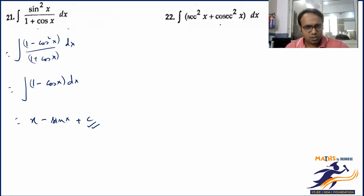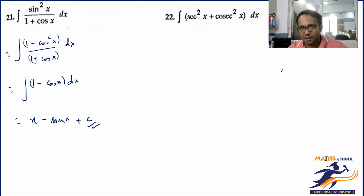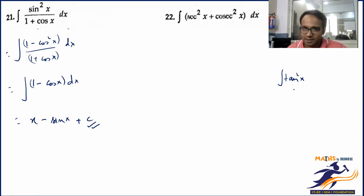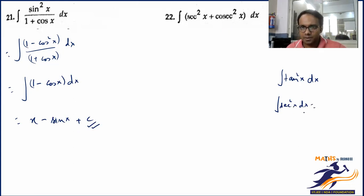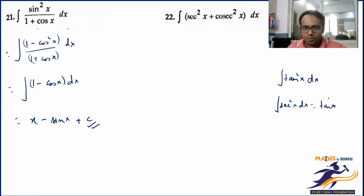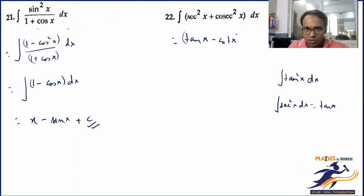Now think about sec²x and cosec²x — these are straightforward. Integrating sec²x gives tanx, and integrating cosec²x gives minus cotx — don't forget plus C. But imagine you have to integrate tan²x plus cot²x. Here tan²x has no direct integration formula coming to mind, so we use trigonometry. Differentiating secx gives secx tanx, differentiating tanx gives sec²x.